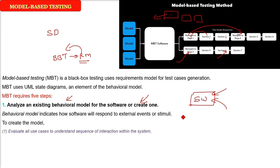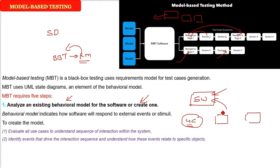We have already discussed how to create these behavioral models, but let me give you a brief hint. Evaluate all the use cases to understand the sequence of interaction within the system. First, use case is the basis, then identify the events that drive the interaction sequence and understand how these events relate to specific objects. Then we have to create a sequence for each of these use cases.